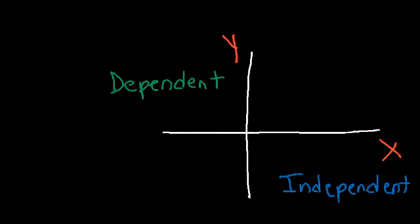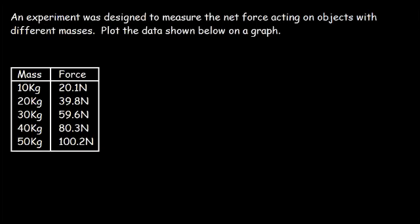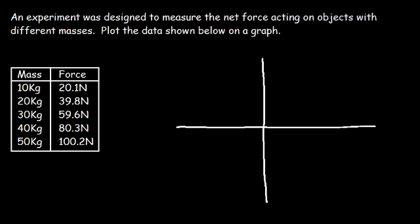So now, how can we apply this information? How can we use it in a problem? An experiment was designed to measure the net force acted on objects with different masses. Plot the data shown below on a graph. We have a physics-related problem. What we need to determine is which one is the dependent variable and which one is the independent variable.